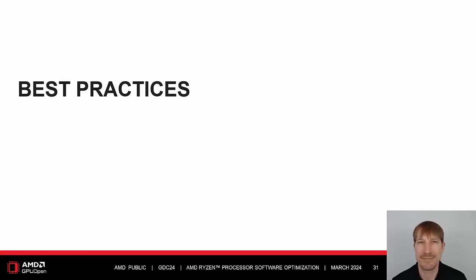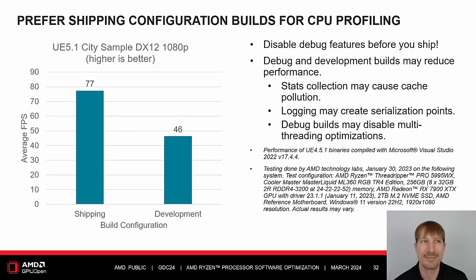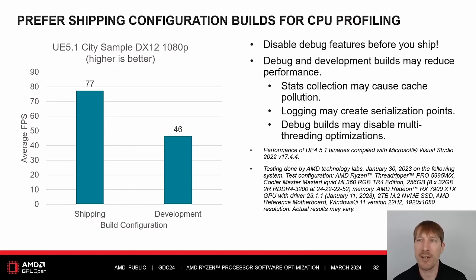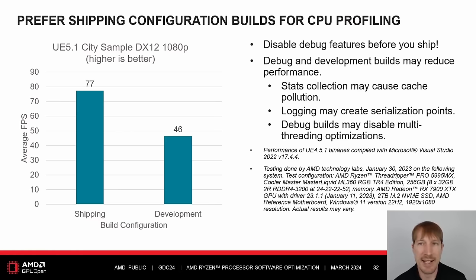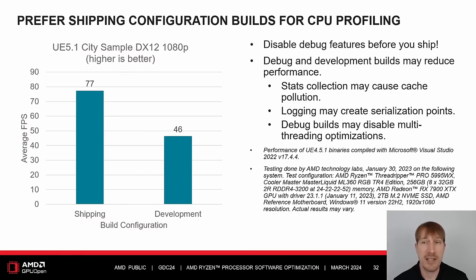Best Practices. While CPU profiling, prefer shipping or test configuration builds over development and debug configuration builds. Development builds may significantly reduce performance and give rise to false alarms that may waste your time. Additionally, collecting stats may pollute the cache, leading you to investigate cache issues in the wrong places. Logging can also create serialization points. Moreover, many debug builds may disable multi-threading optimizations, which can further impact performance.